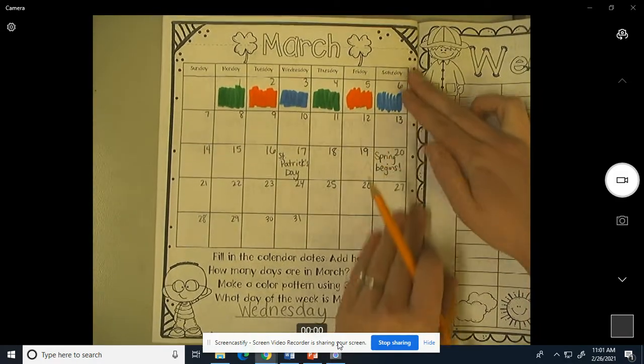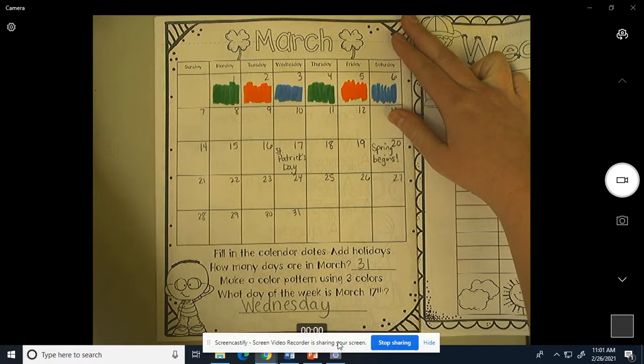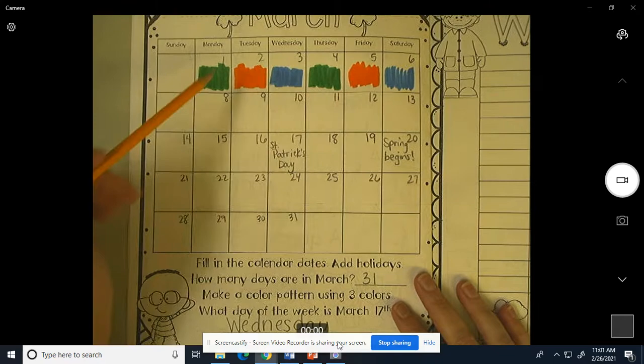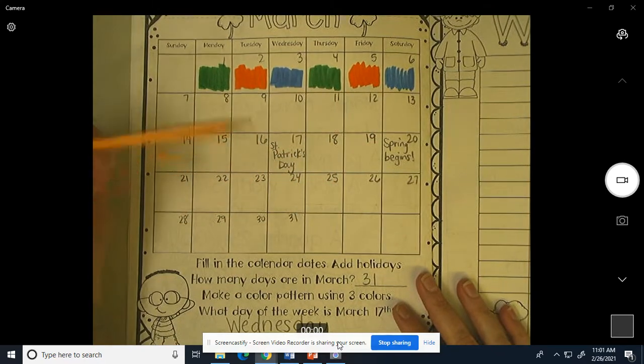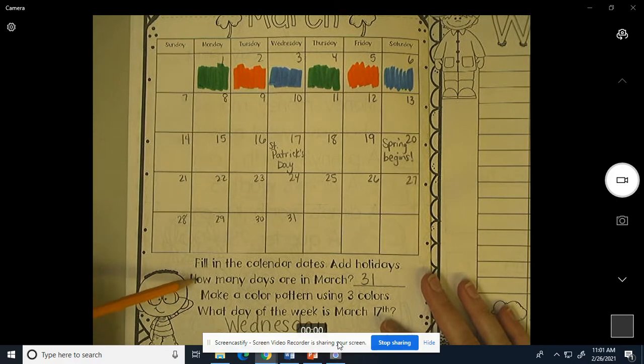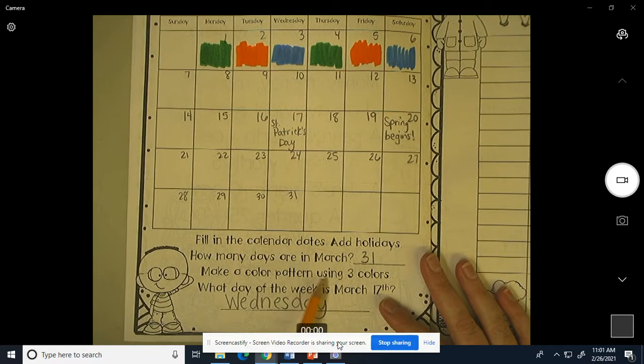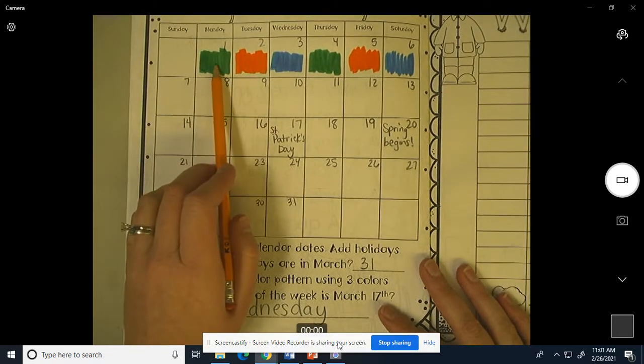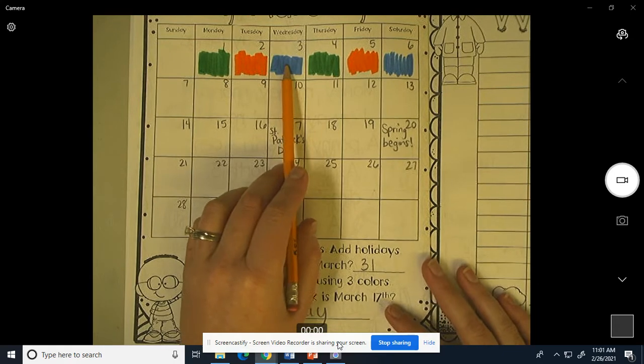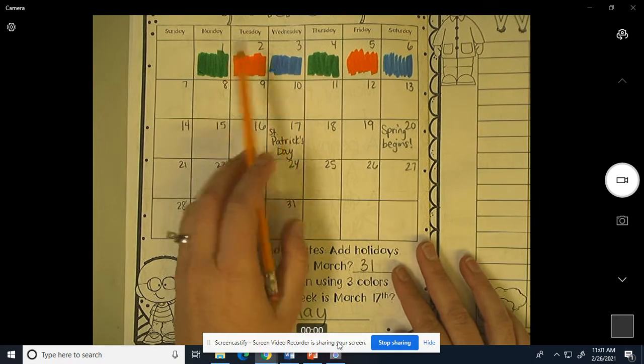This is a page that you will need to pause this video and fill out. You will have to put in the numbers for each day, St. Patrick's Day and when spring begins, and 31 days in March. Make a color pattern using three colors. I used green, orange, and blue, but you can use any color that you would like, but they have to be three colors. It's an A-B-C pattern.